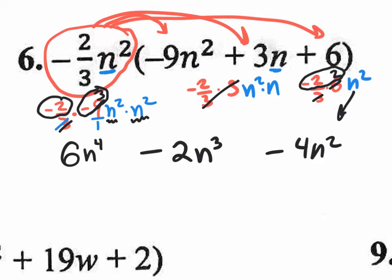So ladies and gentlemen, you have 1, 2, 3 terms. You can't combine any of those. It is in standard form from the highest exponent down to the smallest. So this is our answer.